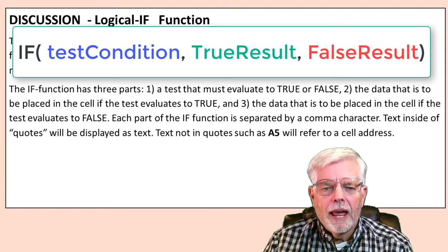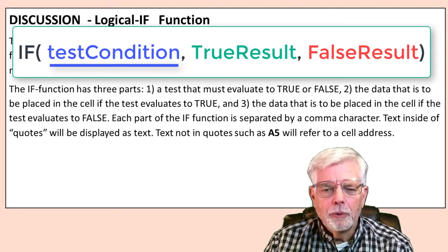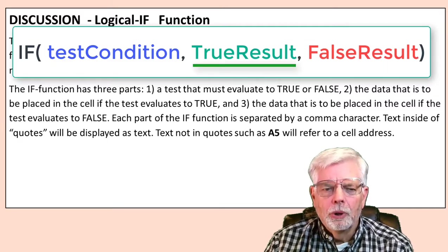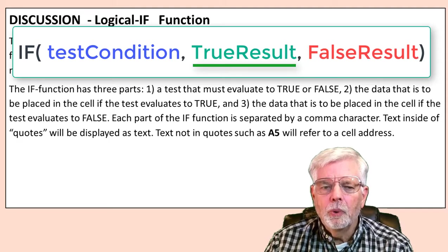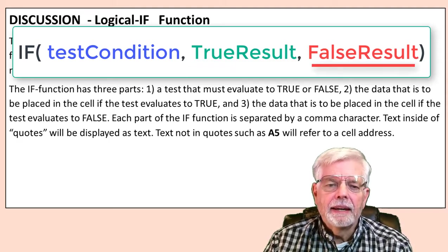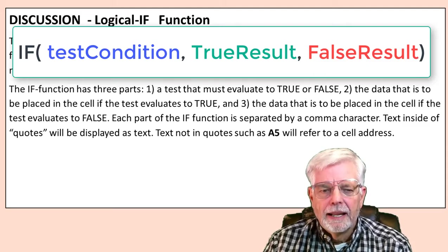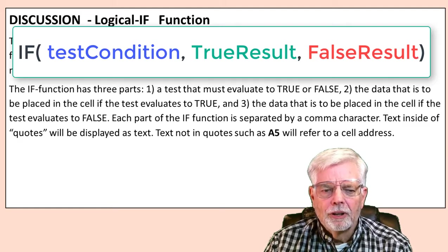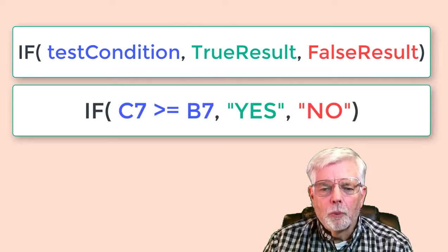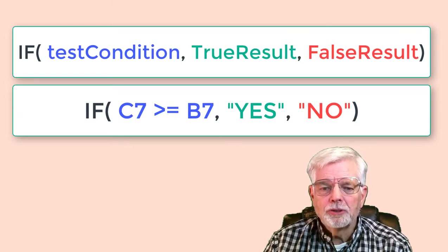The IF function has three parameters. 1. A test that must evaluate to true or false. 2. The data that is to be placed in the cell if the test evaluates to true. And 3. The data that is to be placed in the cell if the test evaluates to false. Each part of the IF function is separated by a comma character. Text inside of quotes will be displayed as text. Text not in quotes such as A5 will refer to a cell address.